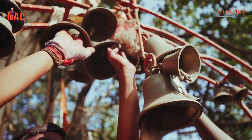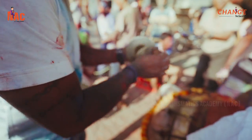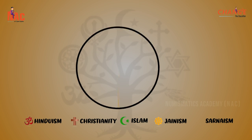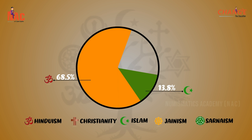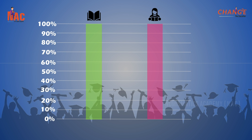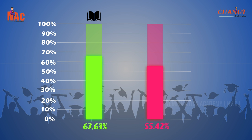Jharkhand is a diverse state with a diverse religious population where the majority follows Hinduism. Hinduism constitutes 68.5%, Islam 13.8%, Sarnaism 13%, Christianity 4.1%, and Jainism 1%. The overall literacy rate of Jharkhand is 67.63% and the female literacy rate is 55.42%.